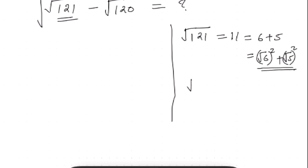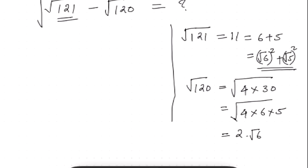Root 120 is root of 4 into 30. Again, we need root 4 into 6 into 5. Again, we need root 2 into root 6 into root 5.